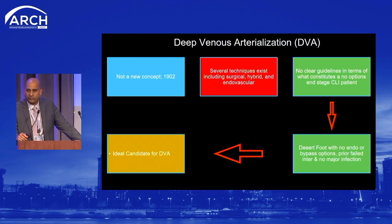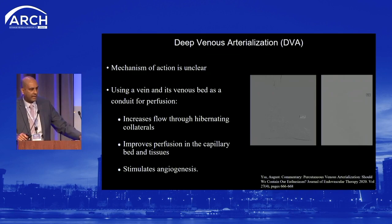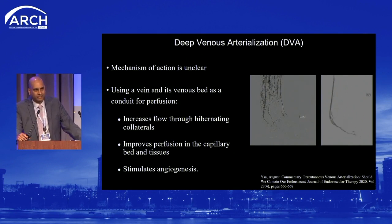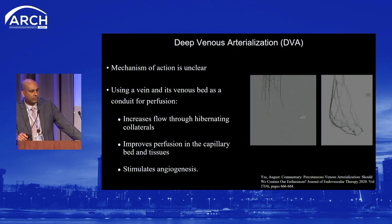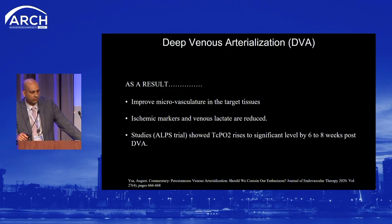We still don't have clear guidelines on what constitutes an end-stage CLI patient, but most experts agree that a desert foot with no endo or bypass options, multiple prior failed interventions, and no existing major infection would be an ideal DVA candidate. The mechanism is clear: using the vein as a conduit increases flow through hibernating collaterals, improves capillary bed perfusion, and stimulates angiogenesis, improving the microvasculature over time. Ischemic markers are reduced, and TCPO2 rises to significant levels by six to eight weeks post-DVA.